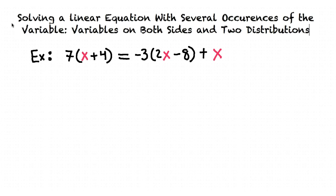We first have to manipulate the equation by using the distribution property to remove the parentheses on each side of the equation. First, we distribute the 7 into x plus 4 and that results in 7x plus 28. Then we distribute the negative 3 into 2x minus 8 which results in negative 6x plus 24 plus x.